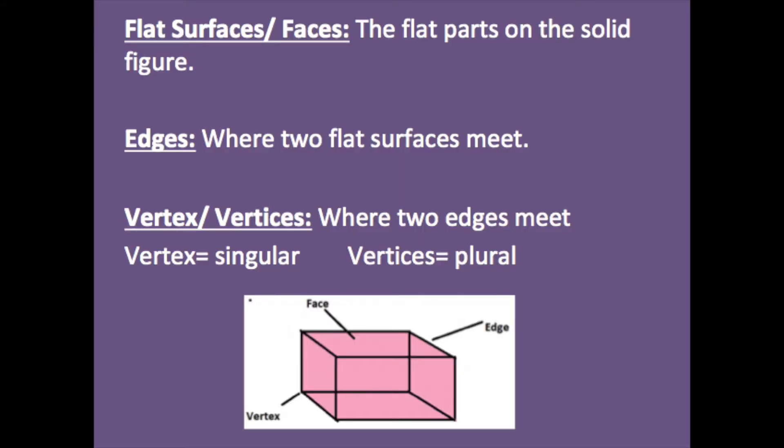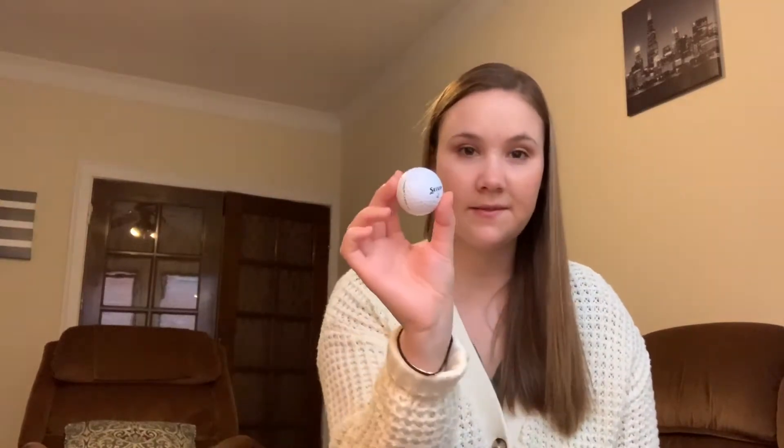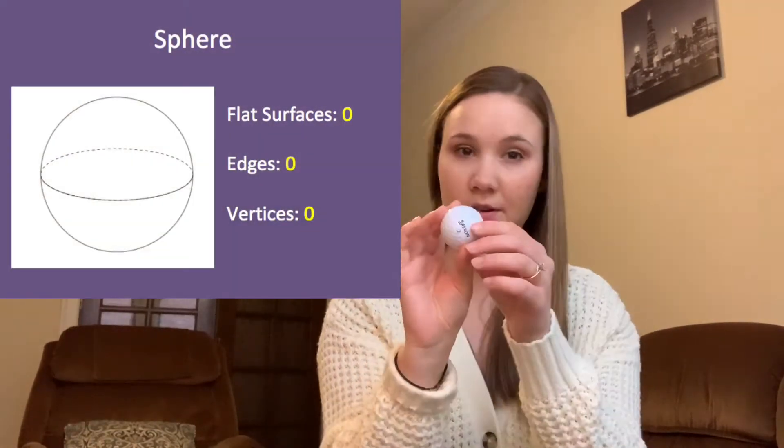Here are some important words you should know. Flat surfaces — sometimes called faces — are the flat parts on a solid figure. Edges are where two flat surfaces meet and make a line. The vertex, or vertices, is where two or more edges meet.